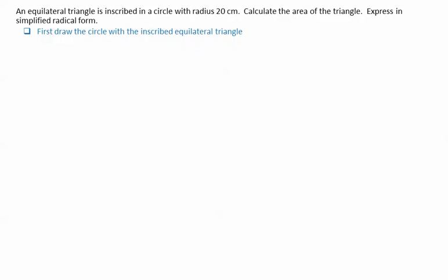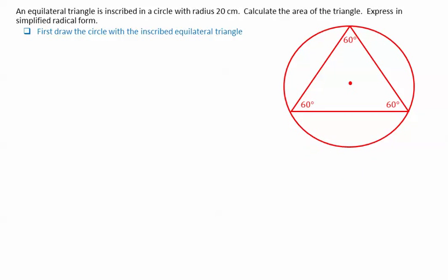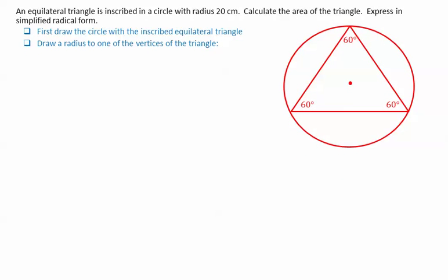First, draw the circle with the inscribed equilateral triangle. Draw a radius to one of the vertices of the triangle — note that the radius is 20 centimeters. This radius bisects the 60-degree angle.